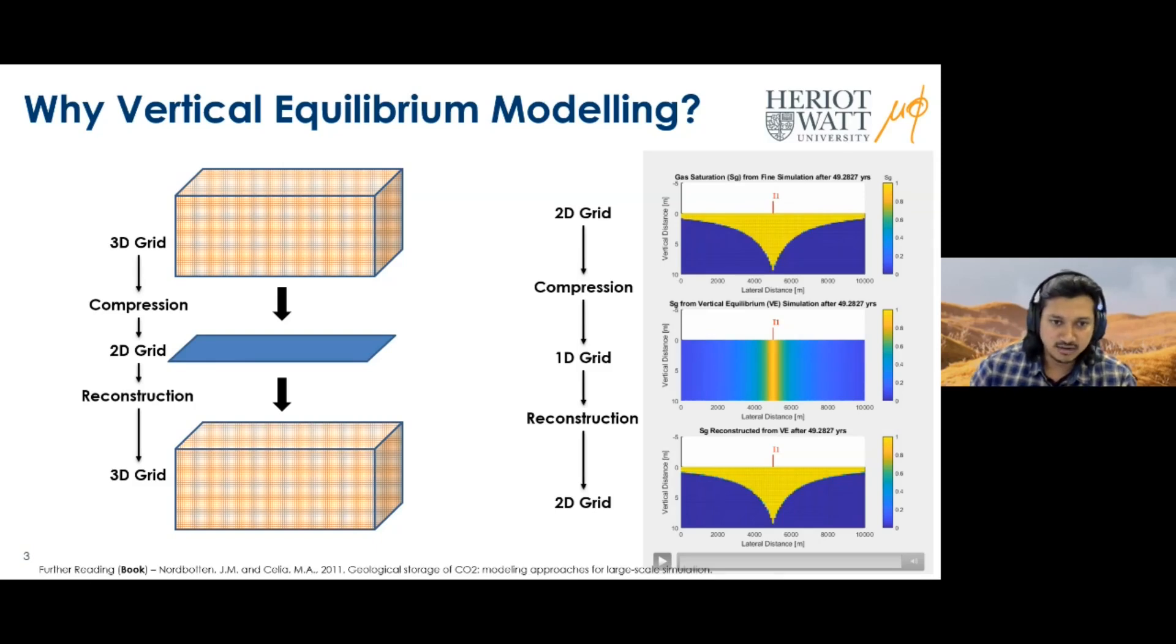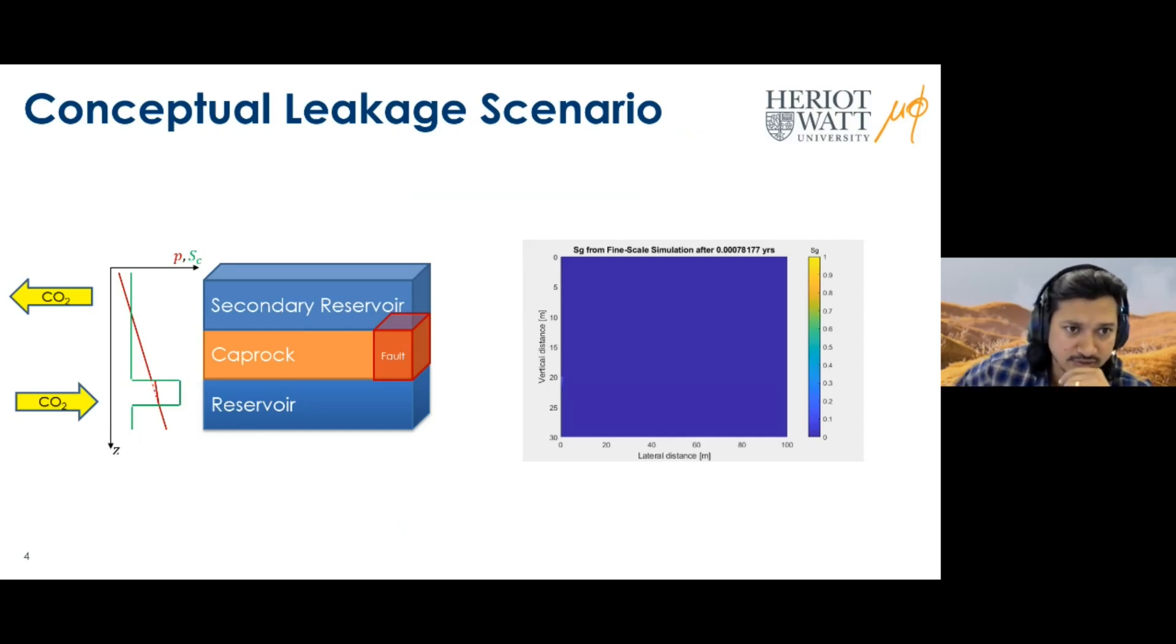Here we show the conceptual leakage model we're going to use as a comparison for all our modeling approaches. You have a three-layer reservoir system: the injection reservoir at the bottom, then a caprock layer, and a secondary layer. It's a 100-meter long, 30-meter tall system with each layer being 10 meters. CO2 is injected at the base and the injection is controlled by a boundary condition on the left, representing a CO2 column height of three or five meters. The boundary condition on the right extreme represents the fault core, with a five-meter-wide fault region connecting the reservoir and top reservoir through the caprock.